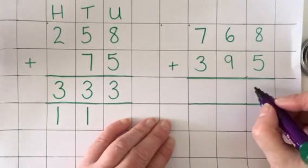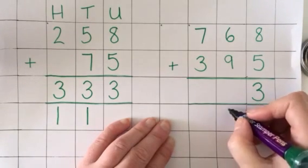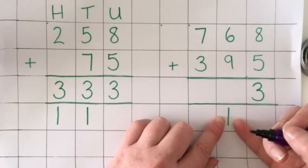I'll add the eight and the five together first. That makes 13, so again I've got three to go in the units column and the one from that 13 waits here to be added with the other tens.